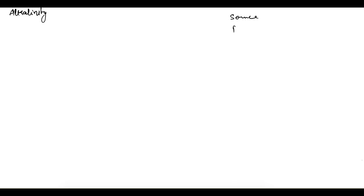Earlier I asked some questions. The first was: what is the source with maximum stability? The answer is river. The reason is that water in a river is constantly flowing, and because of that — if you remember from irrigation in water resources engineering — it has some silt carrying capacity, meaning it always carries some silt.